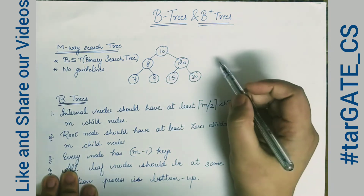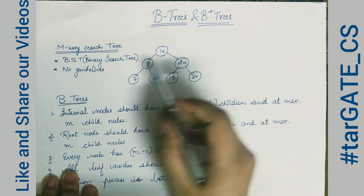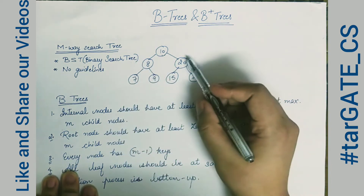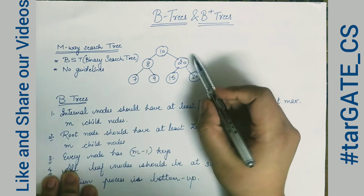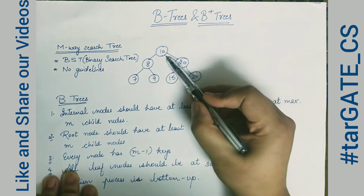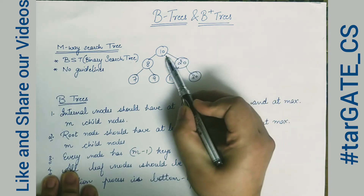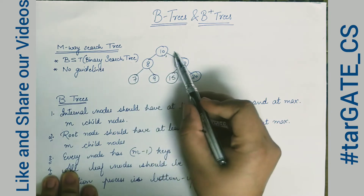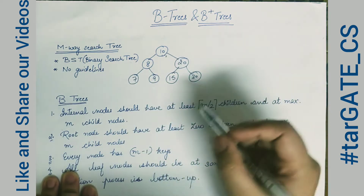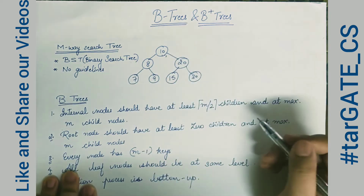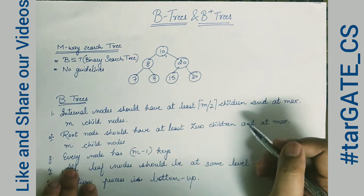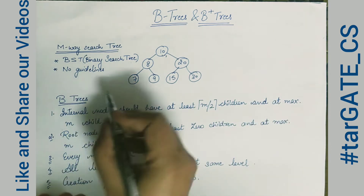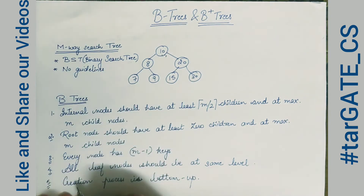M-way search tree is useful for searching. To search any key value, we start from the root: if the key value is smaller we go to the left, if larger we go to the right. That is the simple binary search tree rule. Now we'll start with B trees, which have some guidelines to follow.